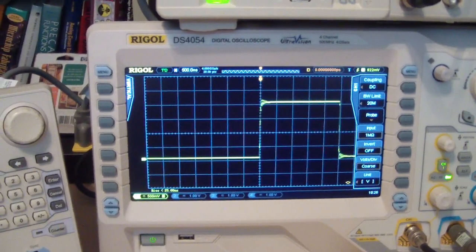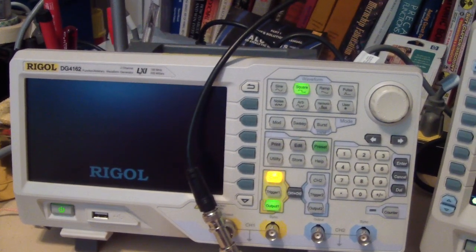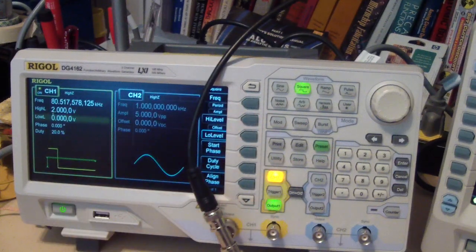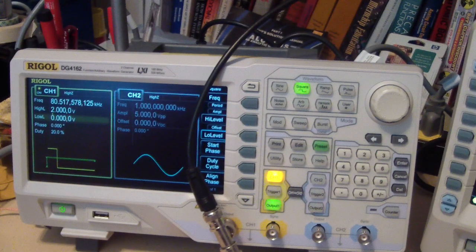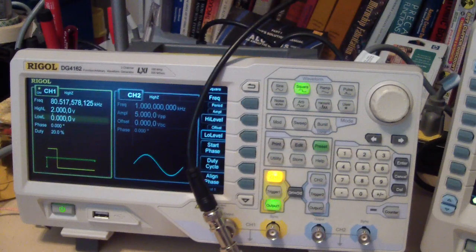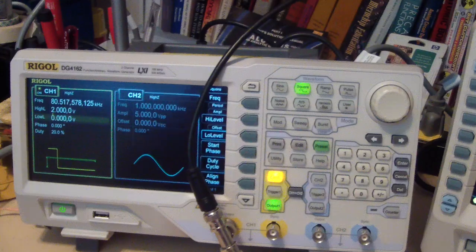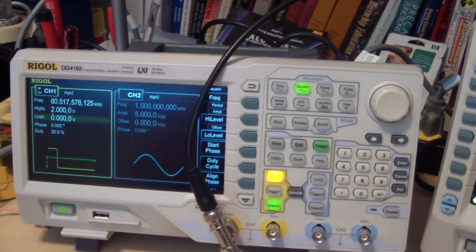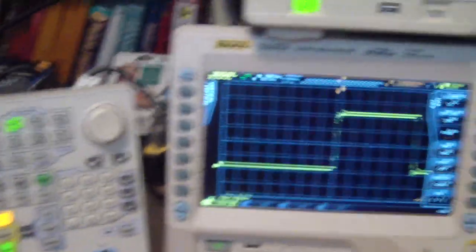Okay, now I also have the function generator - the DG4162. It's capable of frequencies, at least for sine waves, all the way up to 160 megahertz. I'll be evaluating that in a few days. I have a low T connection and both scopes connected. The first waveform I'll generate is a square wave.